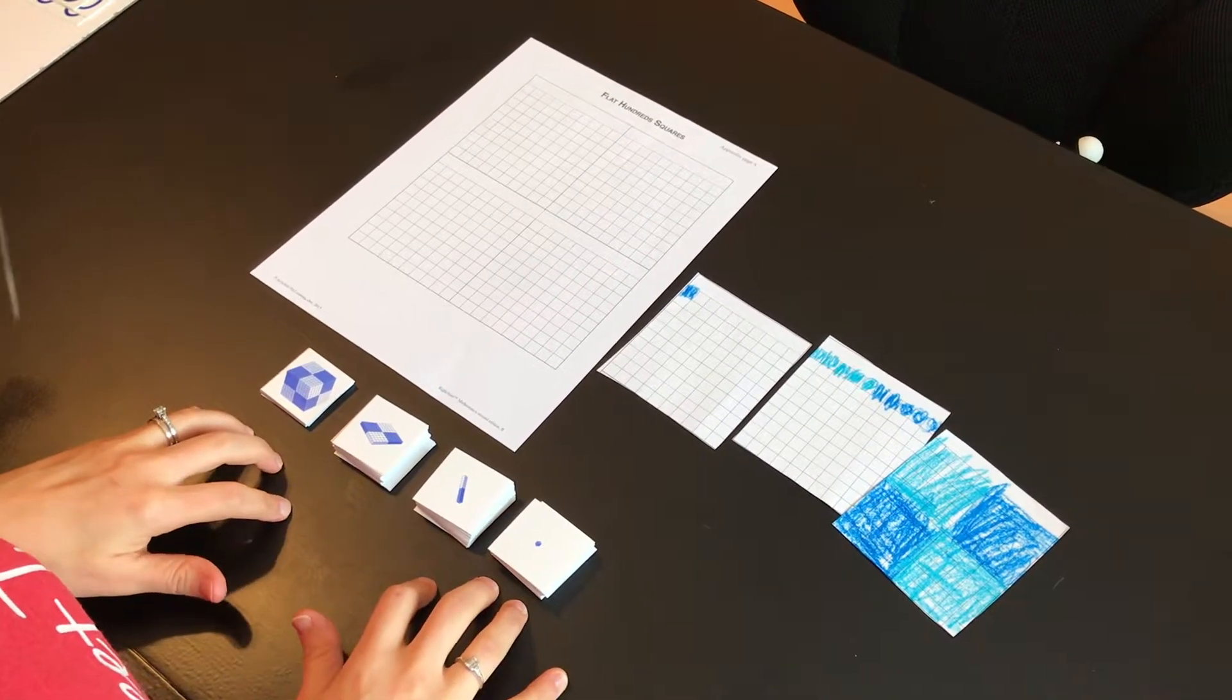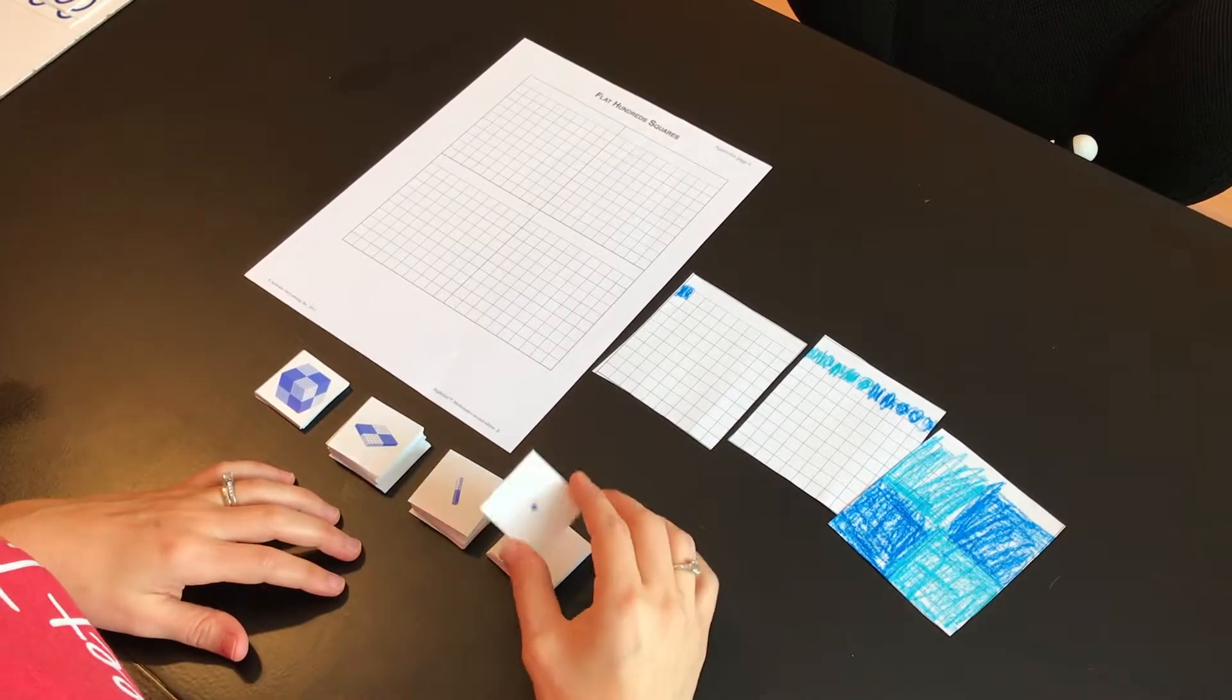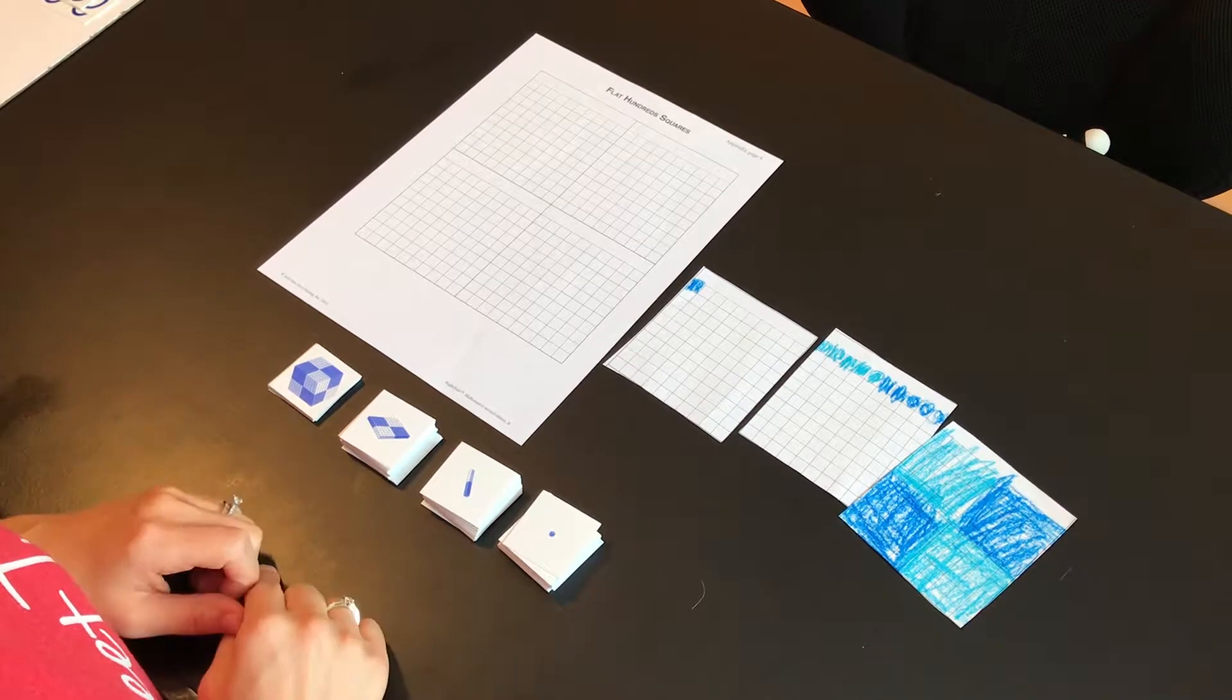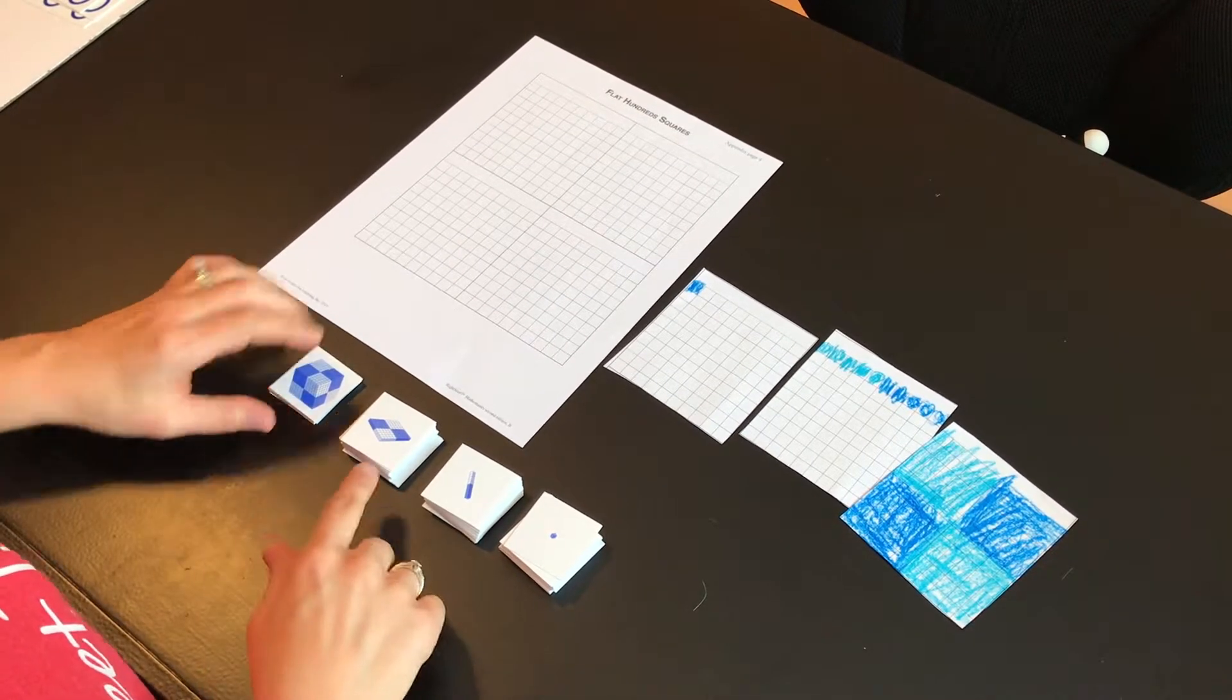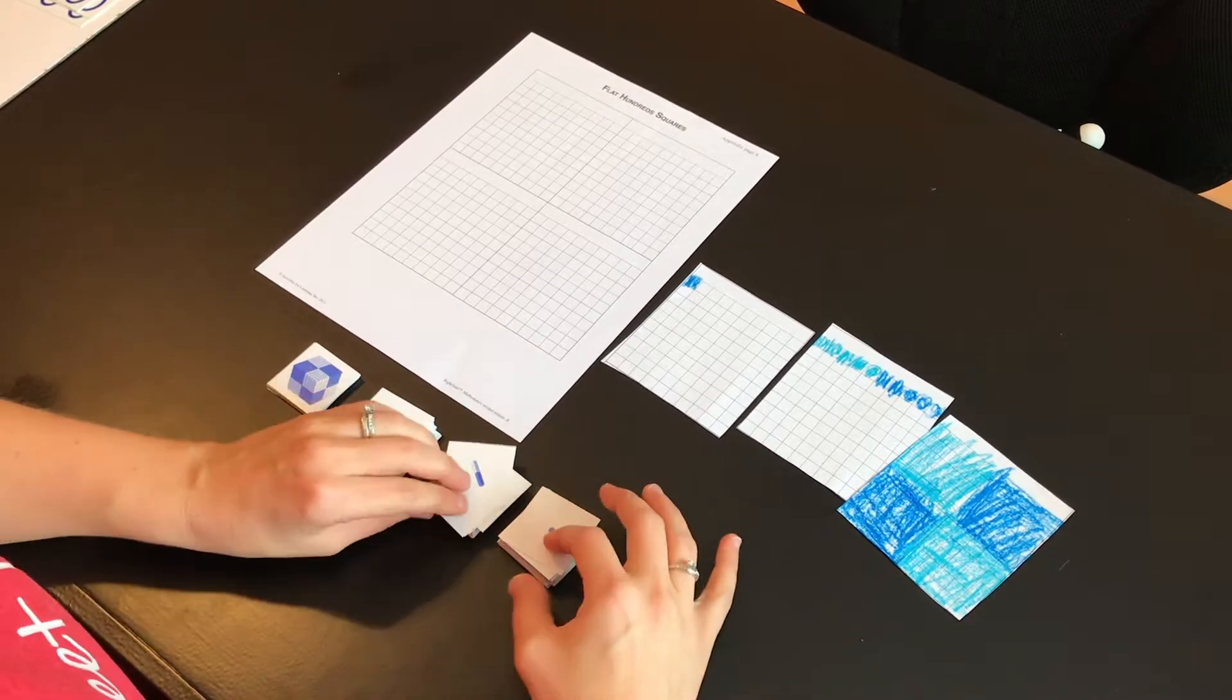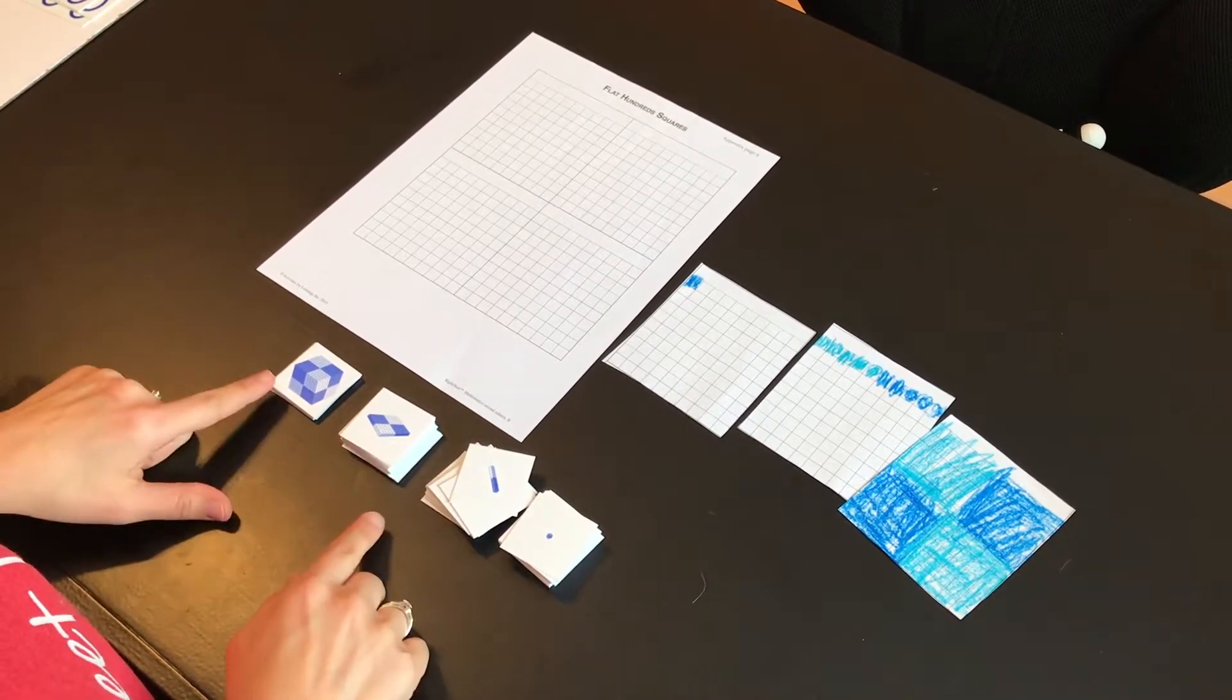Next, I have these base 10 picture cards, which you can easily see the ones, the tens, the hundreds, and the thousands block. So it's easy for them to visualize how much is a 10, how much is a 1, how much is your hundred, and how much is your thousands.